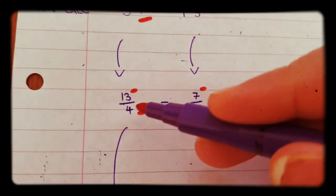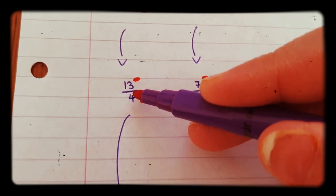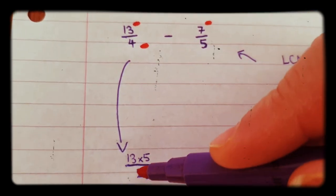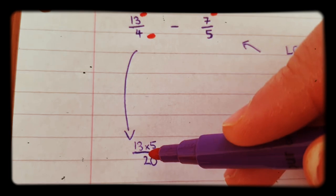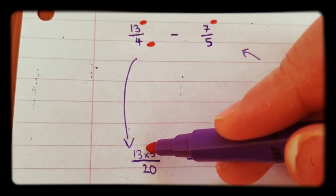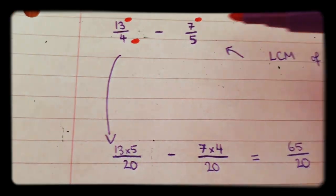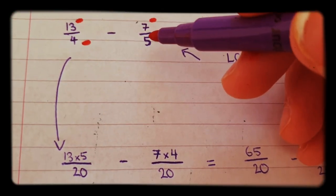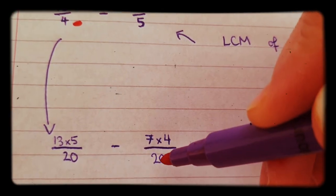We need to turn that into an equivalent fraction with 20 as the denominator. And that's how you do it. Four goes into 20 five times. So 13 times 5, we need to go at the top over this side.